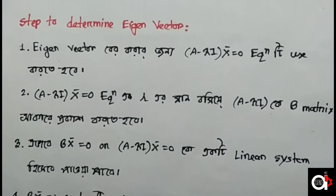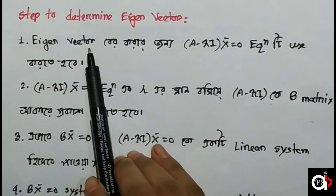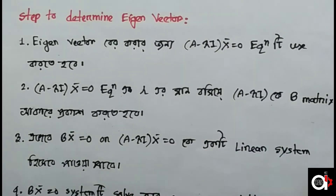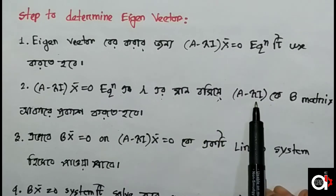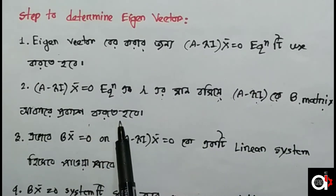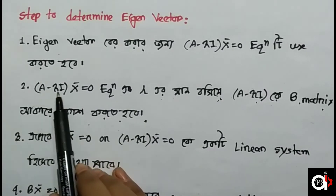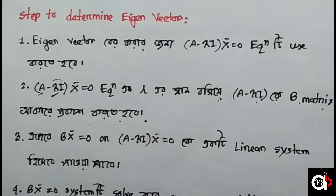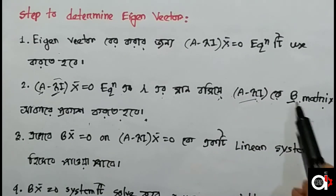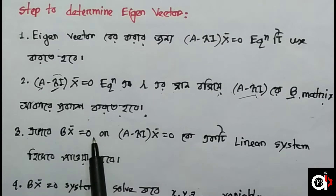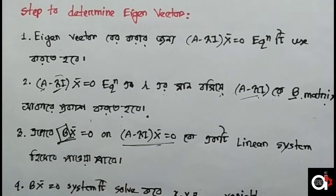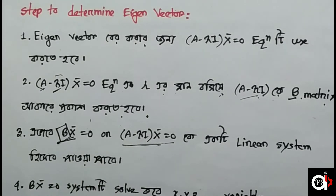Now, steps to determine the eigenvector: to find eigenvectors, we use the equation (A minus λI) into vector x = 0. We substitute the known lambda value into this equation to get matrix B = (A - λI). Then we express B times x as a linear system. By solving this system, we find the values of the unknown variables x, y, z.